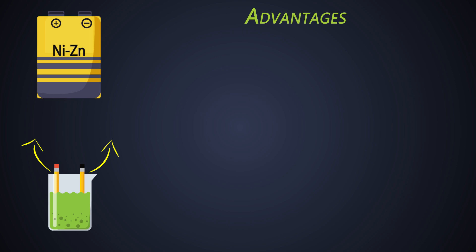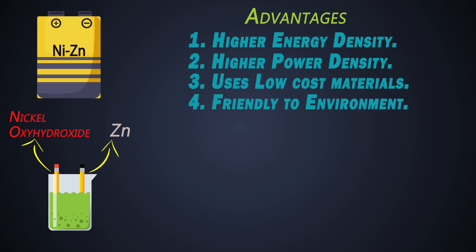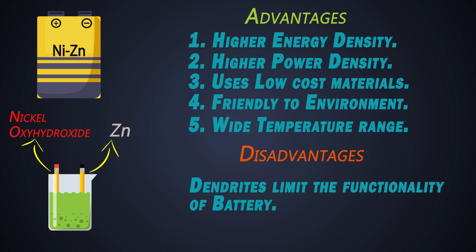Next battery type is nickel zinc. The positive electrode is made up of nickel oxy hydroxide. The negative electrode is zinc. This battery has high energy density and high power density. It uses very low cost materials. This battery is friendly to environment and it can be used in a wide temperature range from minus 10 degrees celsius to 50 degrees celsius. But due to growth of dendrites, we cannot use those in electric vehicles or any vehicle application.